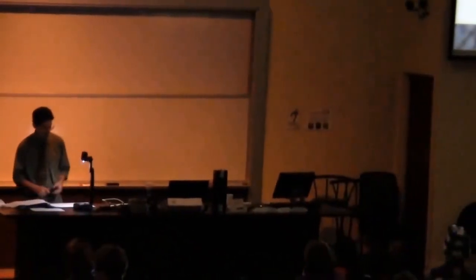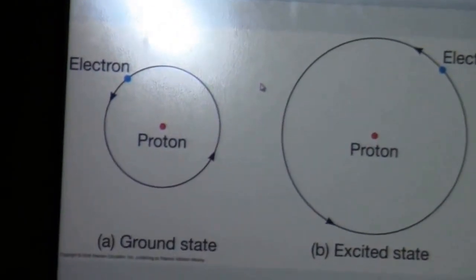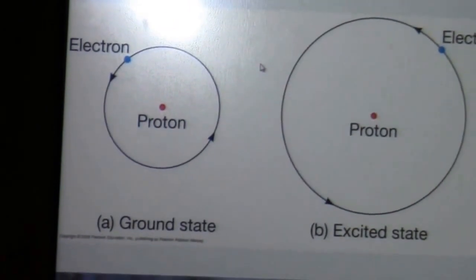So, as you might have guessed, the origin of the absorption lines and the emission lines has to do with the atom. Everything's made of atoms. So we're going to talk about the structure of atoms, atomic structure.